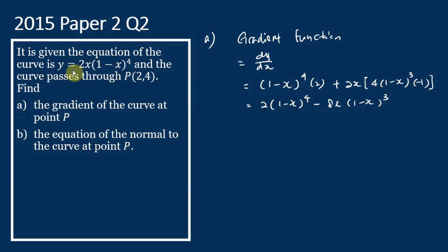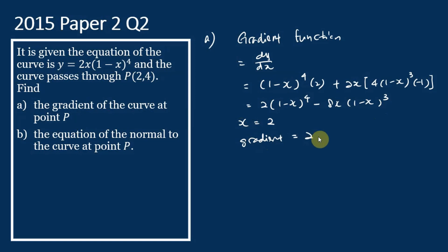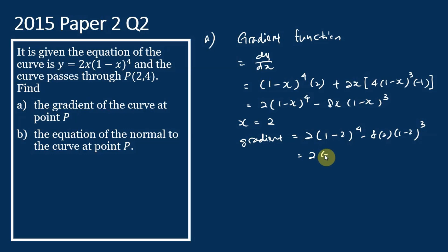So this is the gradient function of the equation. To find the gradient at point P, we substitute the x-value of P into the gradient function. The x-value of P is 2. So when x = 2, the gradient equals 2(1 - 2)^4 minus 8(2)(1 - 2)^3. This gives 2(-1)^4 minus 16(-1)^3, which equals 2 plus 16 = 18.